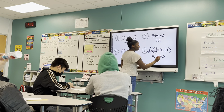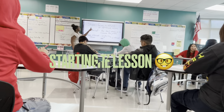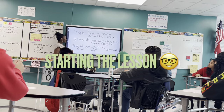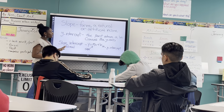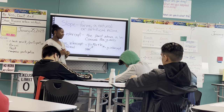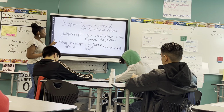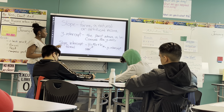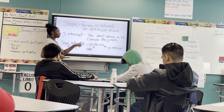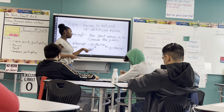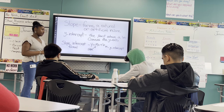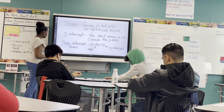So slope is the steepness of a line. And then y-intercept is the point where a line crosses the y-axis. And then what we're going to focus on the most is the slope-intercept formula, and that's y equals m times x plus b. So your m is your slope and b is your y-intercept.